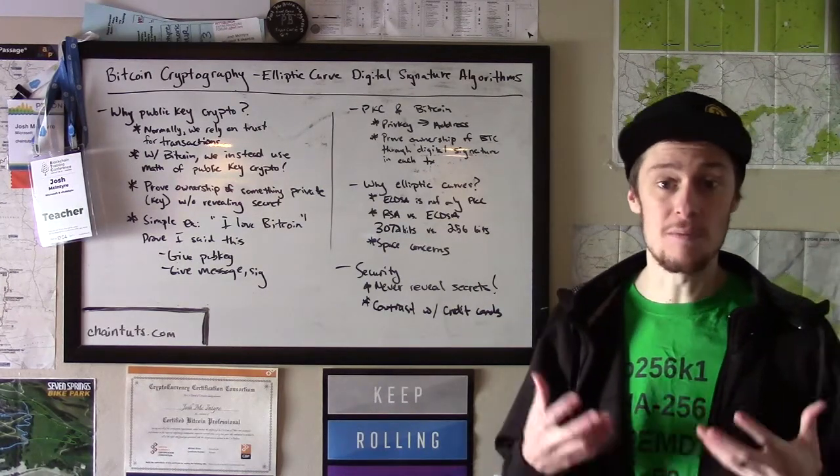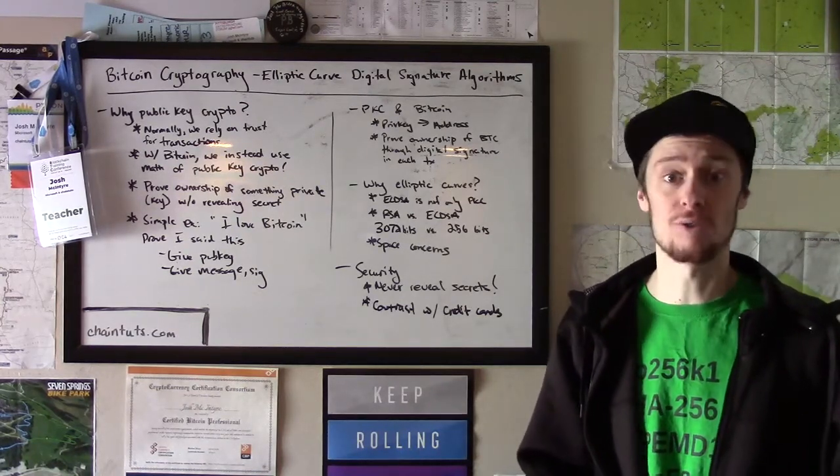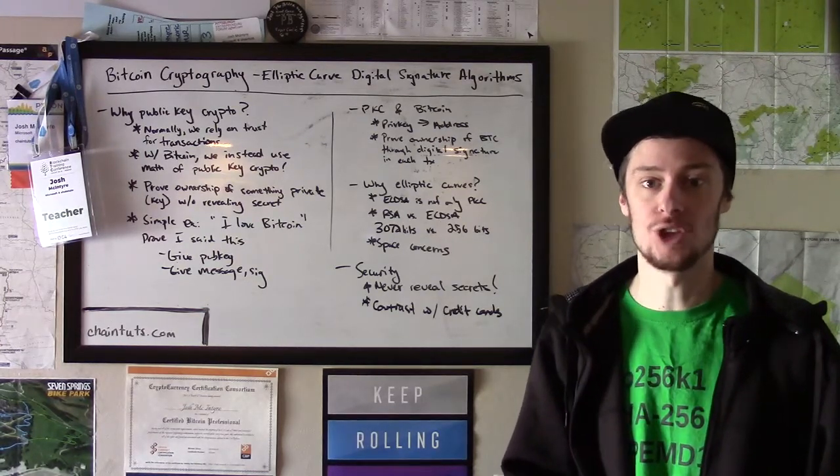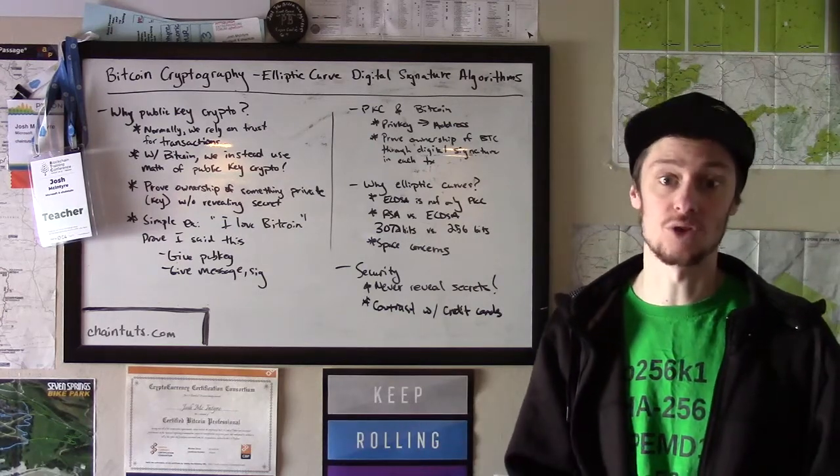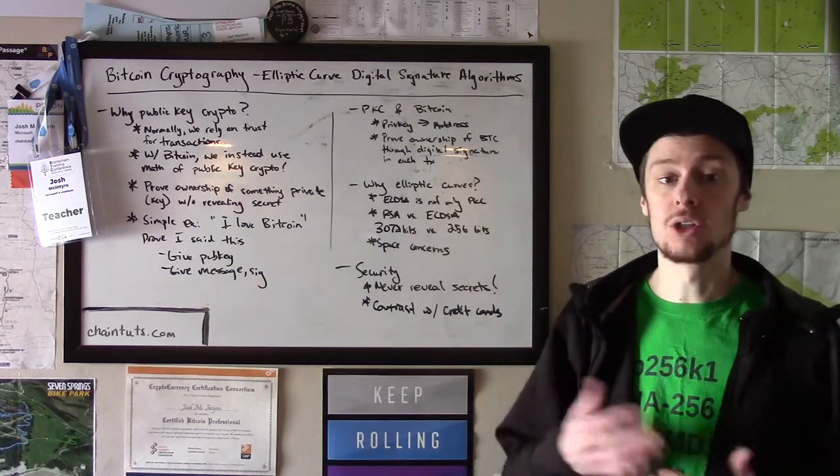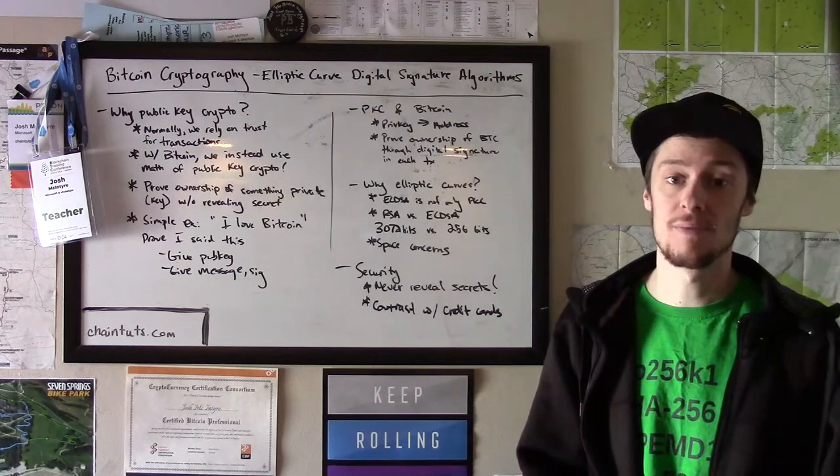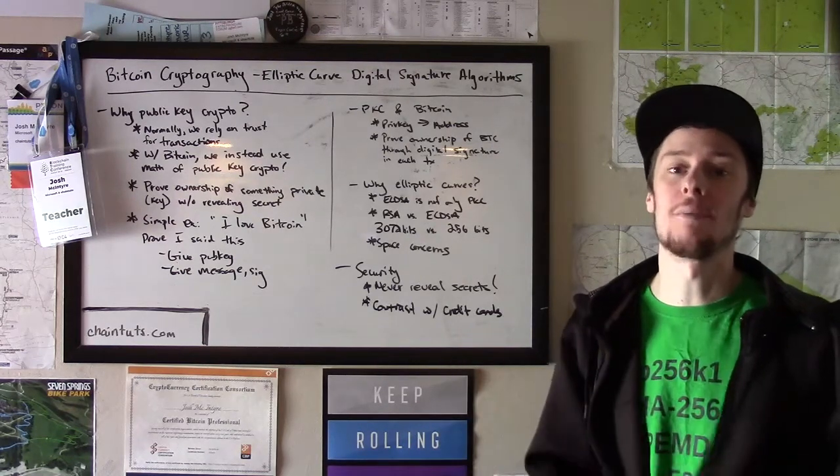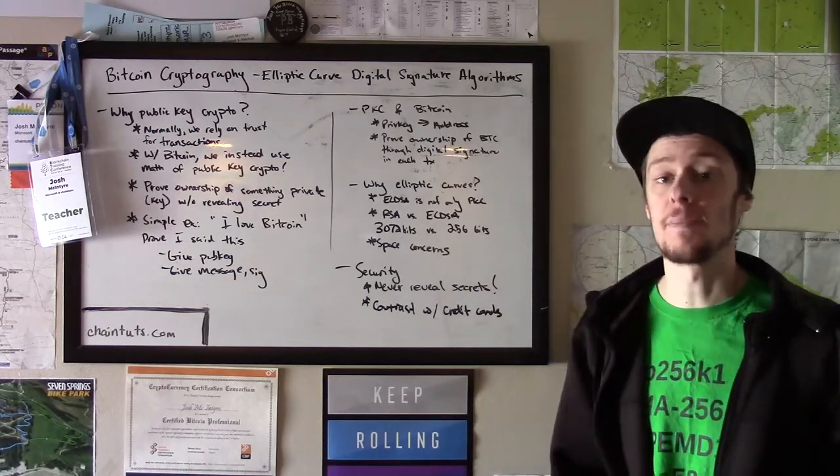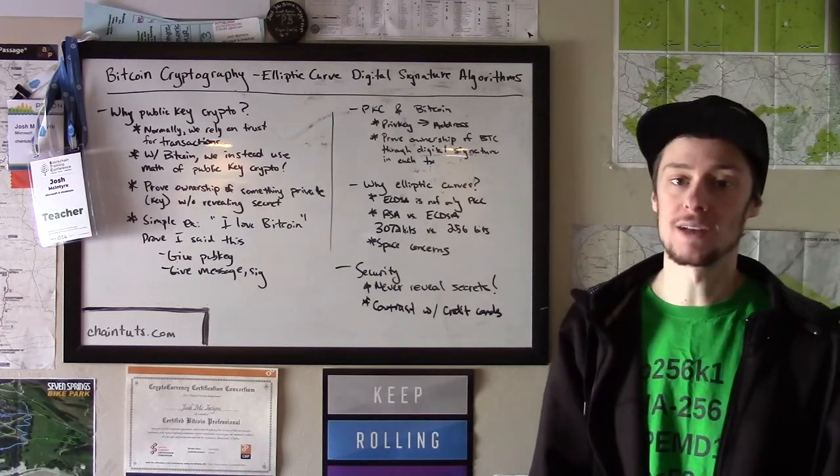So this system, in my opinion, is fundamentally broken. It's held together with the duct tape of bank fraud departments and hope that merchants will not reveal your information and having to get new credit card numbers all the time when your credit cards are eventually hacked. With the Bitcoin system, as long as you keep your private keys safe, you're safe, your money is safe. And you never have to trust anybody else with this secret information.